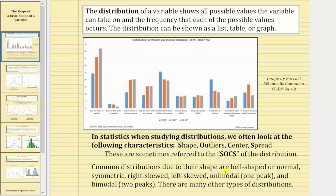Common distributions, due to their shape, are bell-shaped or normal, symmetric, right-skewed, left-skewed, unimodal, and bimodal. However, there are many other types of distributions.